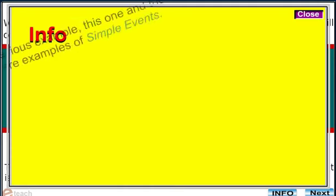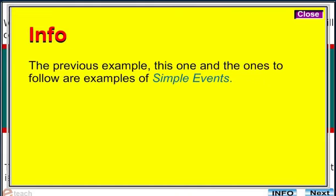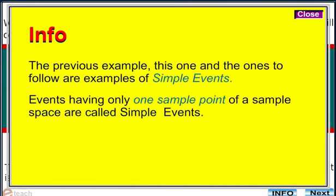Note that the previous example, this one, and the ones to follow are examples of simple events. Events having only one sample point of a sample space are called simple events. We will be reading about them in detail later in this chapter.